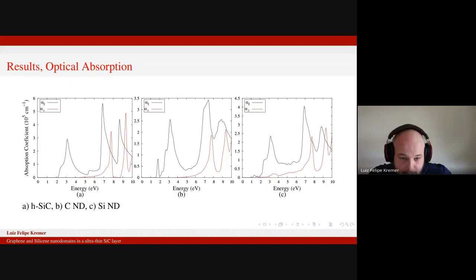For the silicon nanodomain, that's the rightmost figure, we have also peaks below three electron volts. And differently from the other two systems, we have now peaks, small ones of course, but we have now peaks for the perpendicular polarization. This is because the silicon nanodomain is outside the plane. So you have now sp3 hybridization, and not anymore only bonds in the plane.